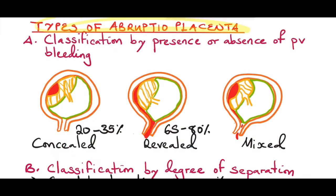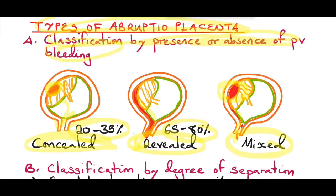There are many classifications of abrupta placenta, but the most clinically used one is classification by presence or absence of pervaginal bleeding. Concealed abrupta placenta accounts for 20 to 35 percent of cases — the blood is hidden between the decidua and the placenta with no pervaginal bleeding. Revealed abrupta placenta accounts for 65 to 80 percent of cases, where you have pervaginal bleeding. In mixed abrupta placenta, blood can still be hidden between the decidua and placenta but some comes out, though it will be minimal.